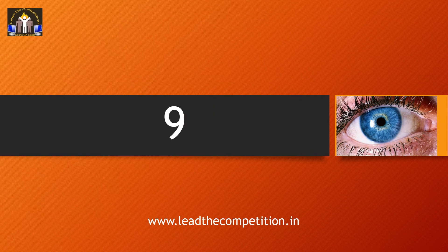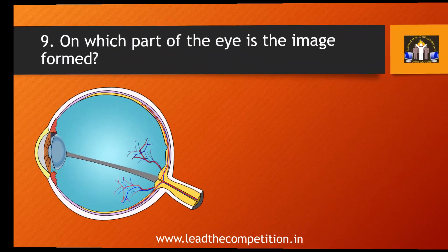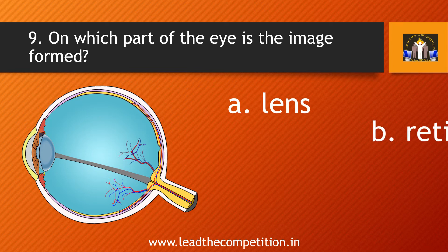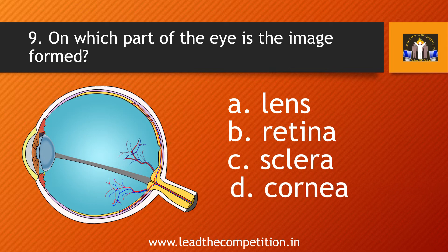Question number 9. On which part of the eye is the image formed? A. Lens, B. Retina, C. Sclera, or D. Cornea.